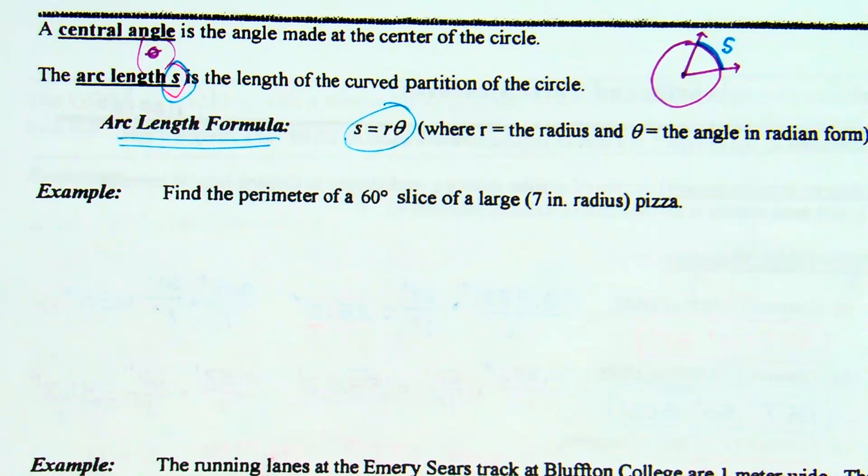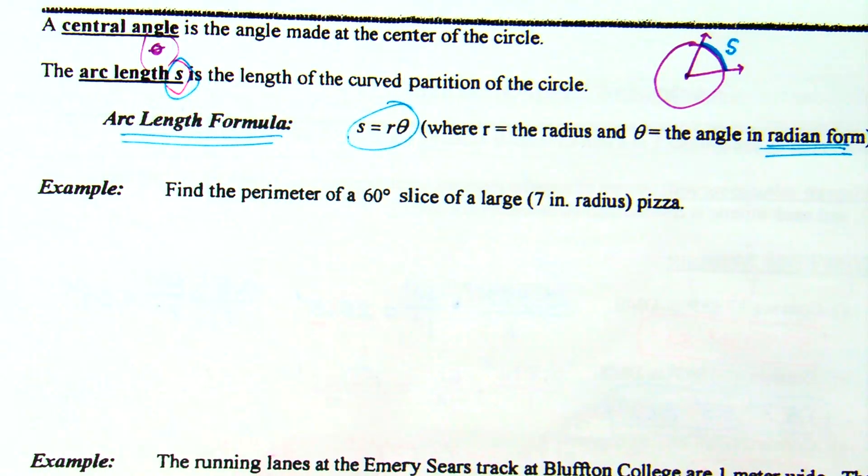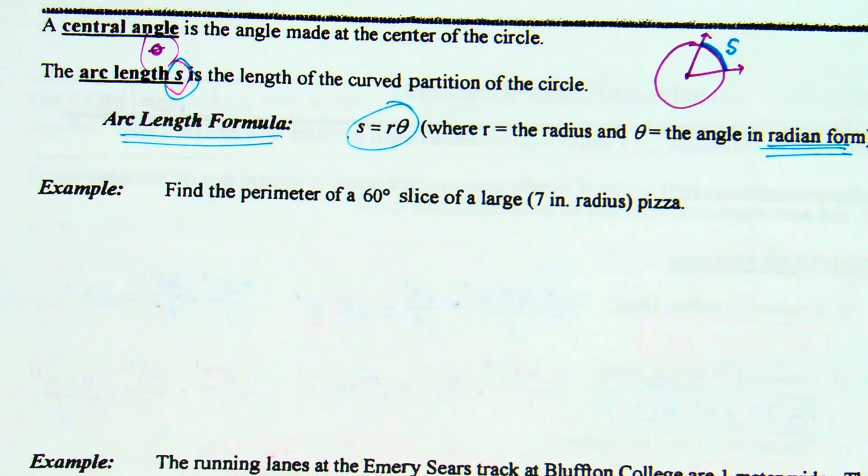If I'm trying to find arc length, I'm trying to find the distance on the circle from one side of the angle to the other side of that central angle. And so what I just traced there in blue would be S. That would be a representation of an arc length. It's that curved partition of the circle on a central angle, theta being the angle. Arc length formula: S equals R theta. S is arc length, the length of the curved partition.